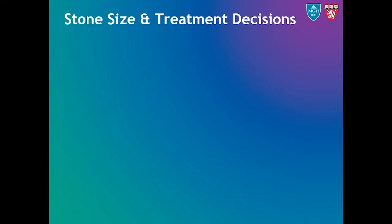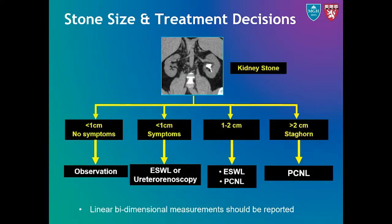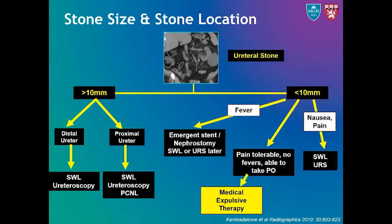Among the various factors dictating treatment strategies, stone burden is one of the most important. While asymptomatic patients with stones less than a centimeter often undergo observation, symptomatic patients are often treated with lithotripsy or ureteroscopy. In patients with stones larger than 2 centimeters, nephrolithotomy is often performed. For stone burden assessment on CT, linear bidimensional measurements should be performed and reported. In ureteral stones as well, treatment depends on stone size, with stones larger than a centimeter often treated with urologic intervention.